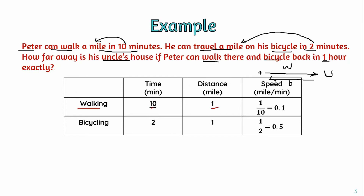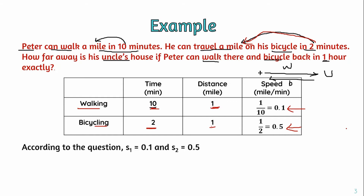Using the formula distance divided by time: for walking, it's one mile divided by 10 minutes, equal to 0.1 miles per minute. For the bicycle, distance divided by time gives one divided by two, equal to 0.5 miles per minute. So the walking speed is 0.1 and the cycling speed is 0.5.